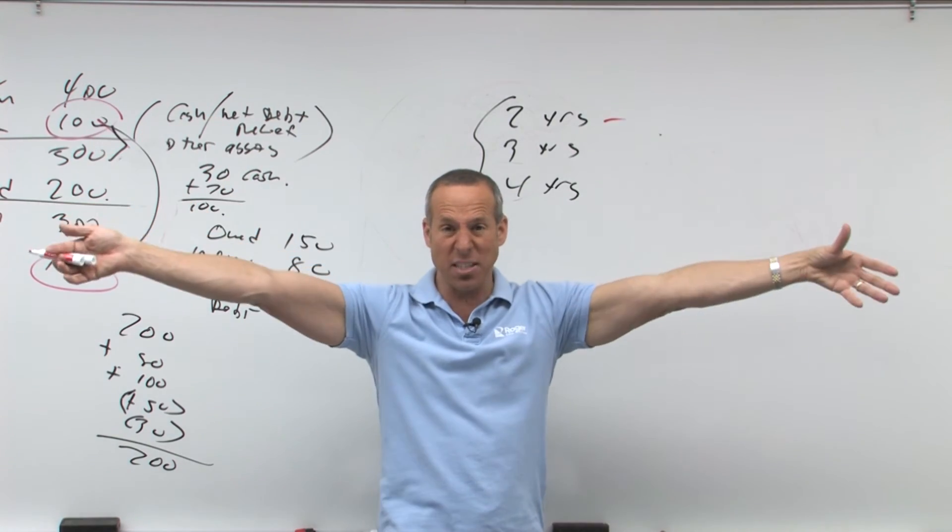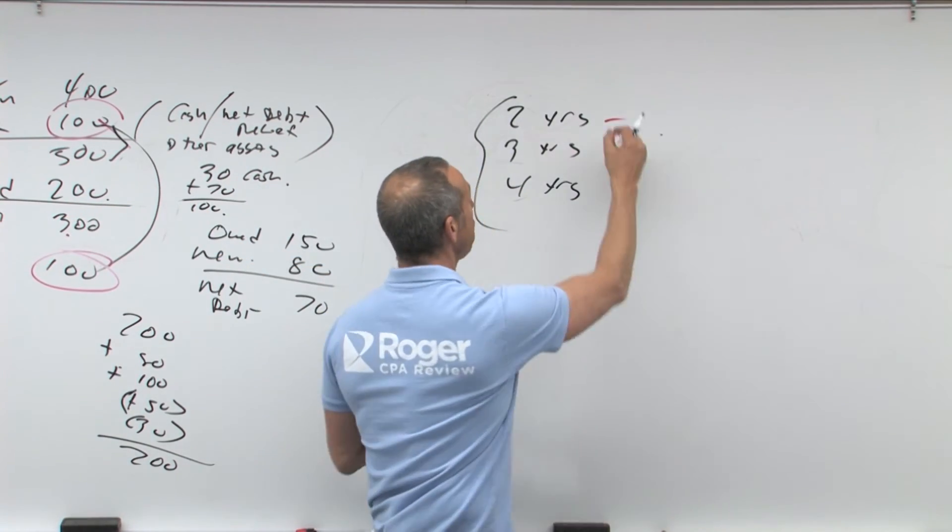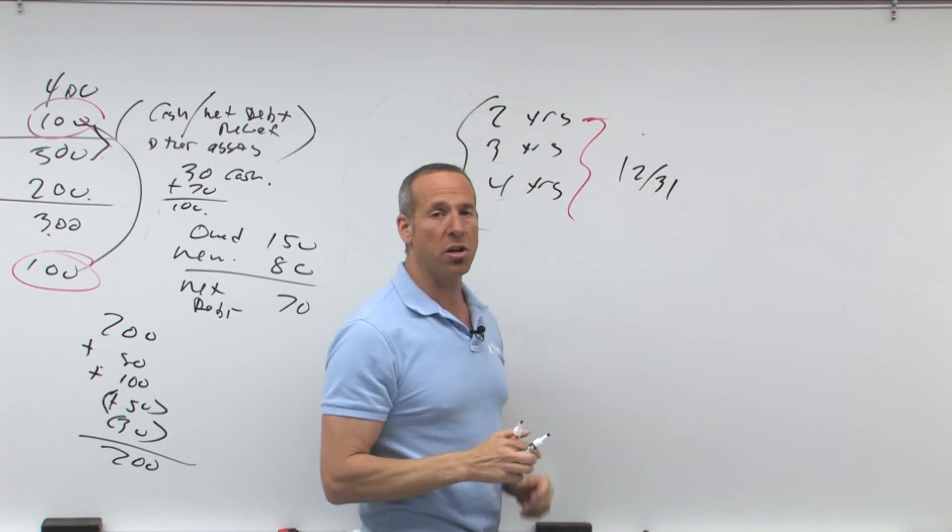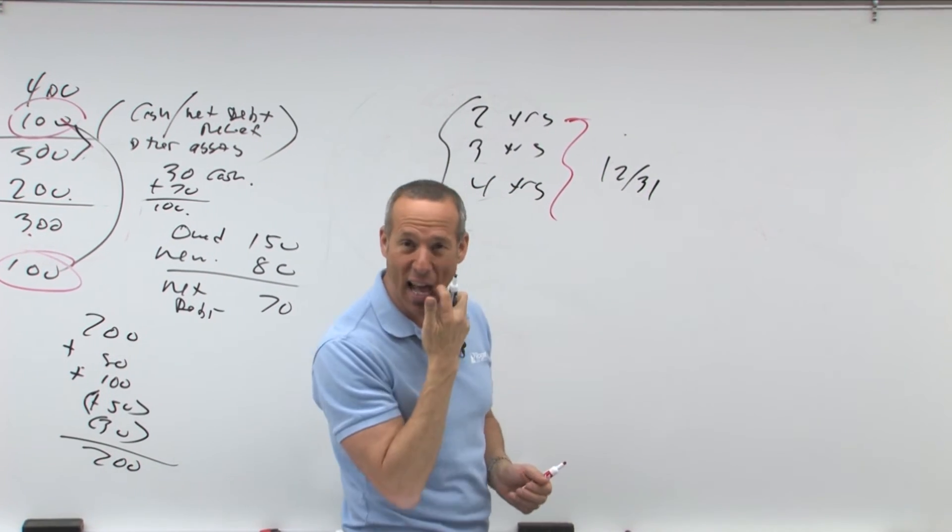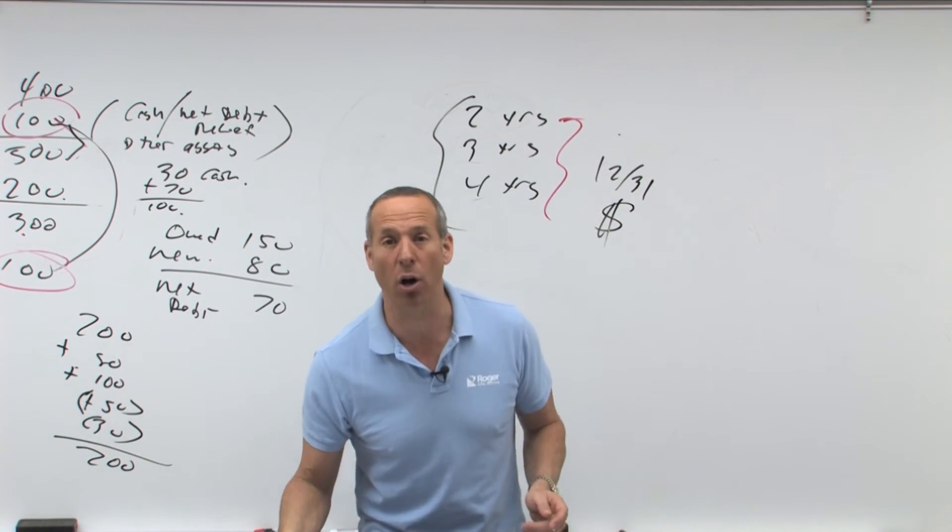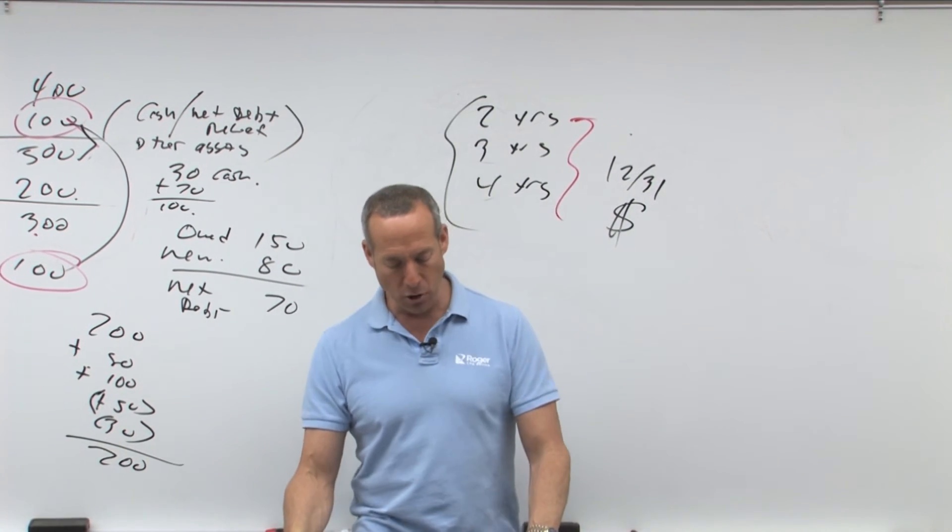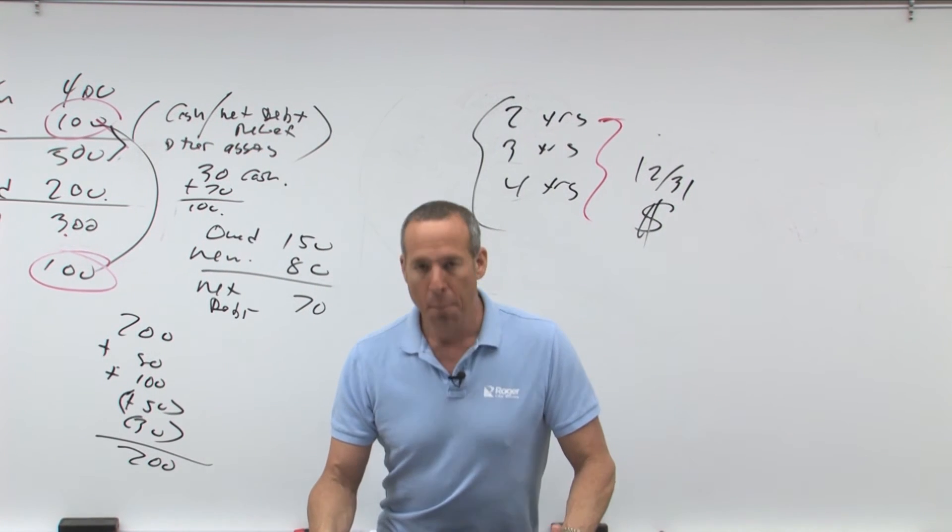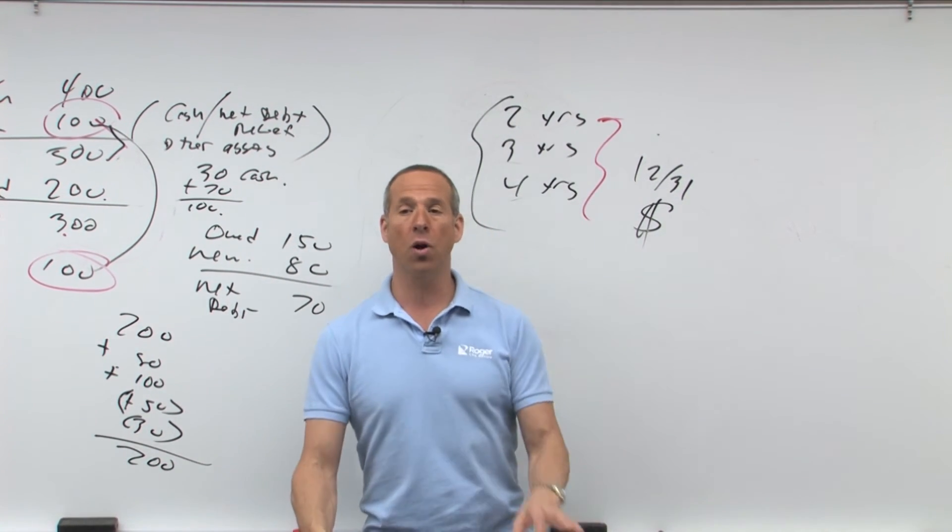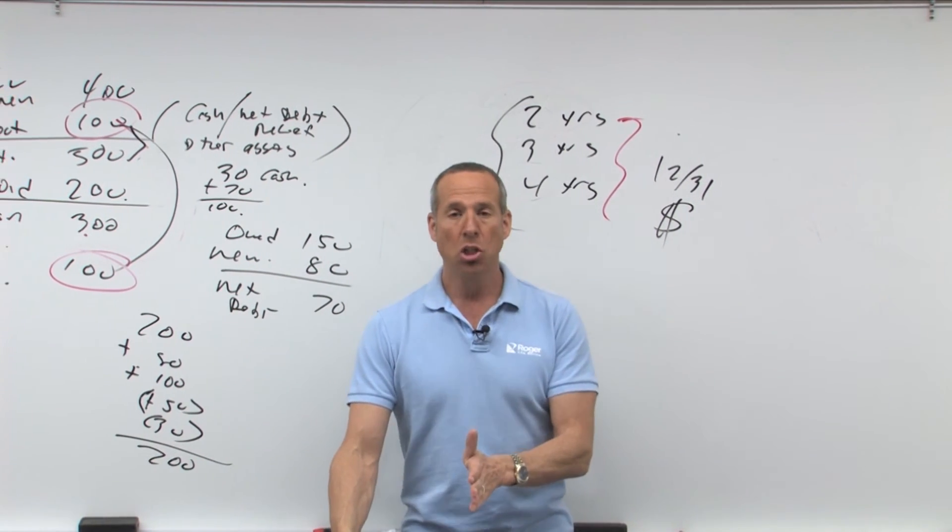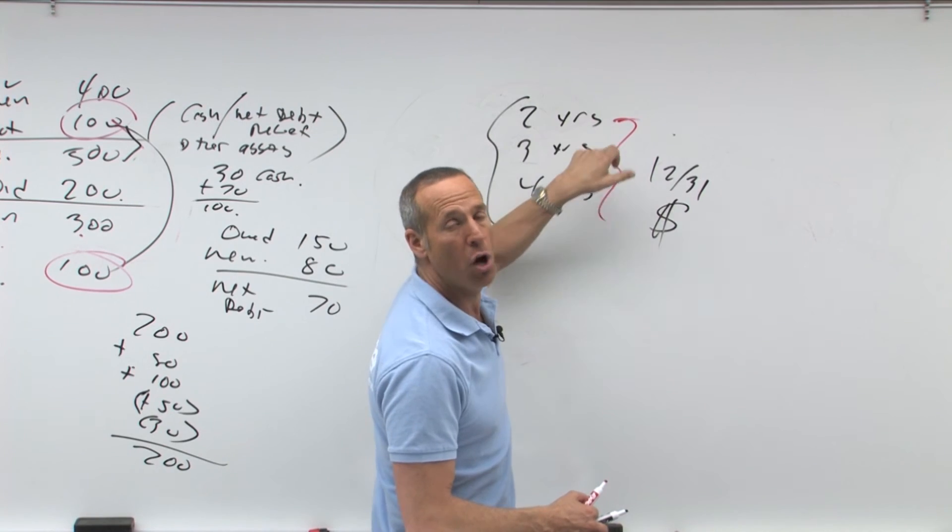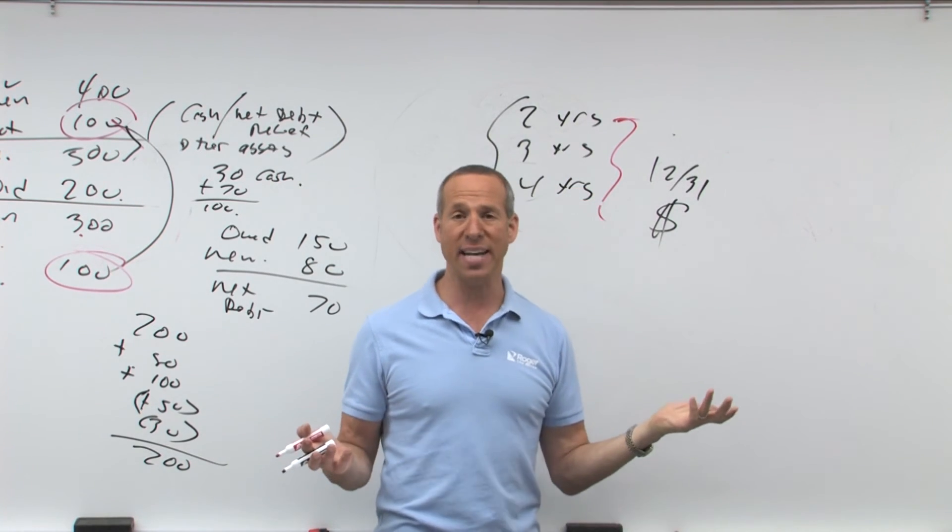If instead, it's a federal disaster area, they give me four years. Four years from when? From December 31st of the year in which, not when the accident happens, but when I get the cash proceeds, the money, the dinero. So if my house blows up in X1, but I get the money in February of X2, the clock starts running December X2, so as long as I invest it within two years of X2, three years of X2, four years of X2, I'm not going to get taxed on the gain.